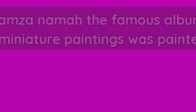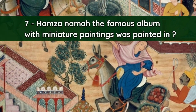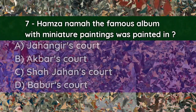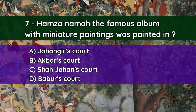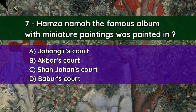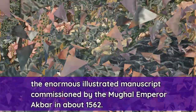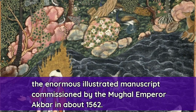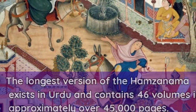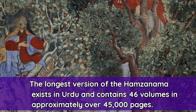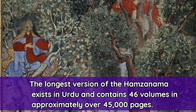Question number seven: Hamza Nama, the famous album with miniature paintings, was painted in — A. Jahangir's court, B. Akbar's court, C. Shah Jahan's court, D. Babur's court. And the correct answer is B — Akbar's court. It is the enormous illustrated manuscript commissioned by the Mughal emperor Akbar in about 1562. The longest version of Hamza Nama exists in Urdu and contains 46 volumes with approximately over 45,000 pages.